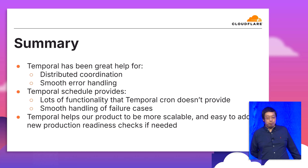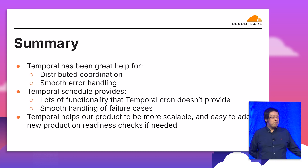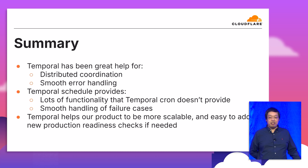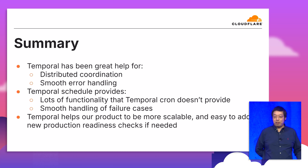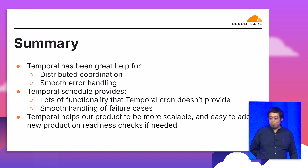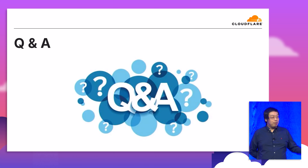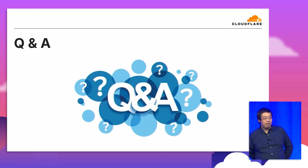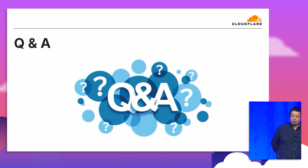To summarize, Temporal has been really helpful to us — it helps us be more horizontally scalable, and the Temporal Schedule helps refresh scores on a defined interval. We are able to add additional checks without worrying about overloading servers; we just add the checks and Temporal handles the rest automatically. That's basically how we use Temporal at Cloudflare for production readiness checks.